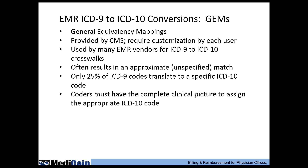If you're not familiar with GEMs — General Equivalency Mappings — this is a mapping system used by many EMR vendors to map from an ICD-9 code to an ICD-10 code, developed by CMS. It's helpful, but keep in mind that most codes you get will be approximate and unspecified. Roughly 25% of ICD-9 codes will translate to a direct ICD-10 code through GEMs. For the rest, you will get an approximation and need to apply additional specificity. Don't automatically go with an unspecified code from a GEMs mapping.